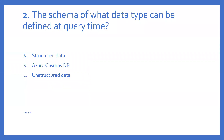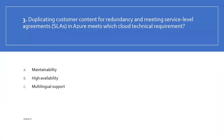Question 2: the schema of what data type can be defined at query time — structured data, Azure Cosmos database, or unstructured data? Unstructured data — the schema of unstructured data is typically defined at query time. This means that data can be loaded onto a data platform in its native format. Option C is the right answer.